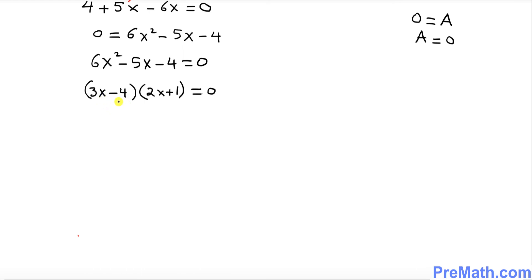Now we can split them up, we can break them up. I can put down 3x minus 4 equal to 0 and 2x plus 1 equal to 0.